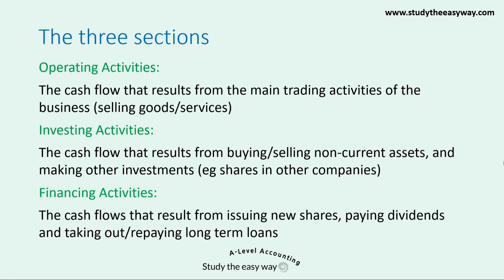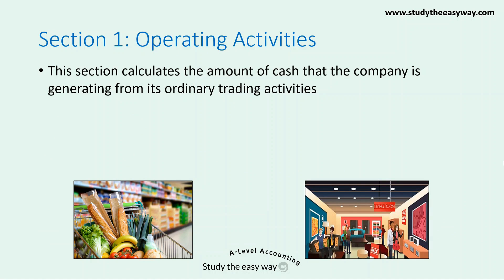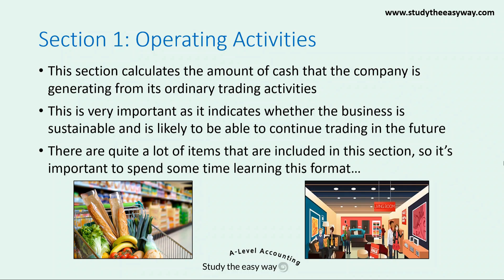Let's have a look at the sections one at a time, starting with Section 1, Operating Activities. This section calculates the amount of cash that the company is generating from its ordinary trading activities. This figure is really important because it indicates whether the business is sustainable and likely to continue trading in the future, or whether it's at risk from a cash flow point of view and therefore more likely to fail. There are quite a lot of items included in this section, so it's important to spend some time learning the format.